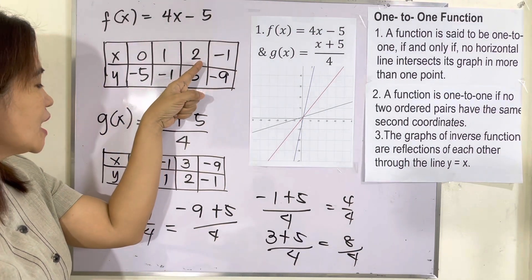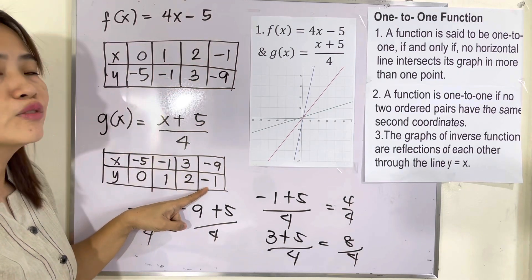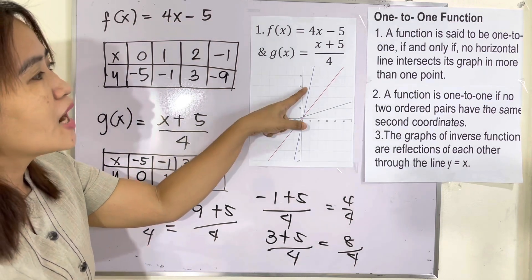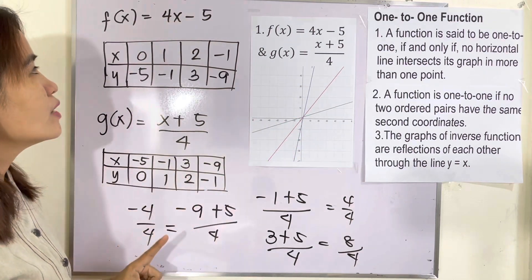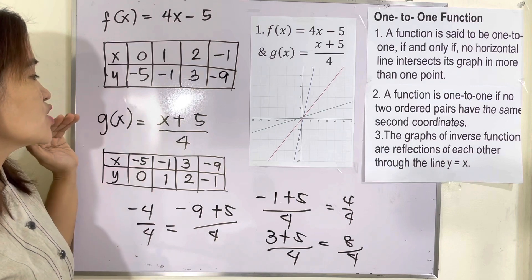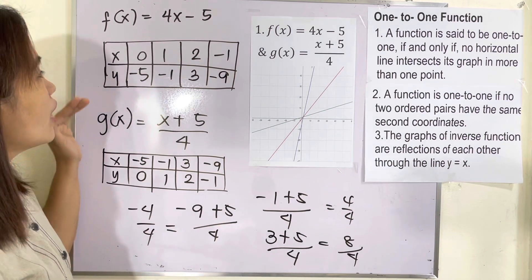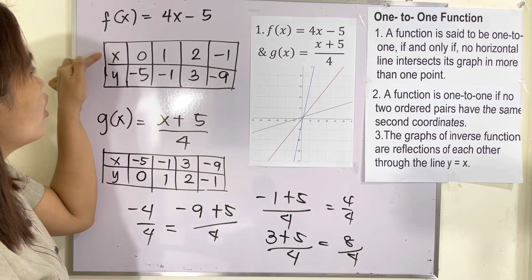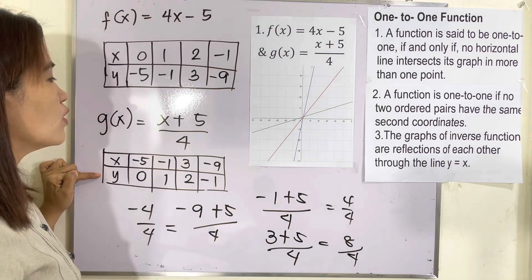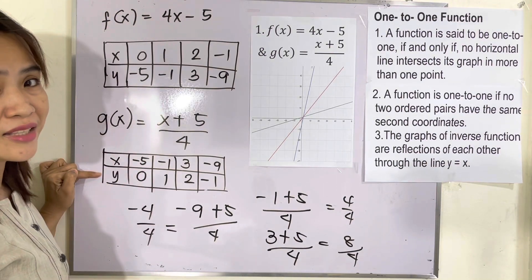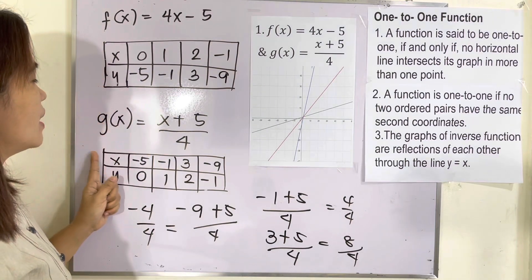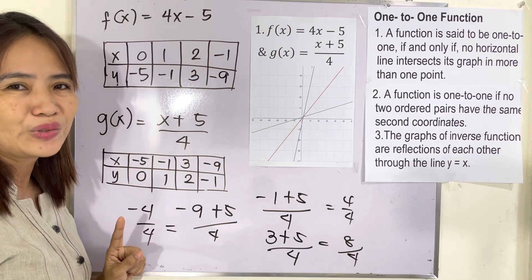What do you notice? The set of x-values (domain) of f(x) is the range of its inverse g(x), and vice versa. That's why they are reflections of each other. The domain of f(x) is the range of its inverse g(x), and the range of f(x) is the domain of its inverse g(x).